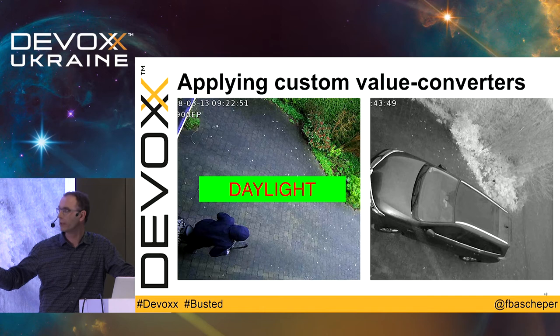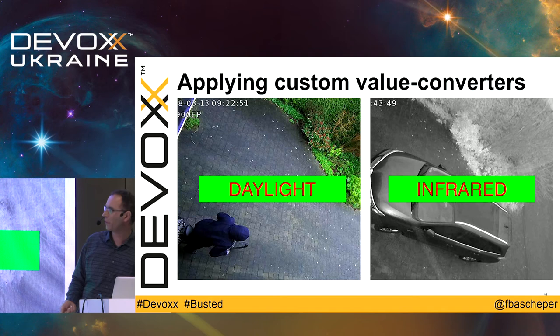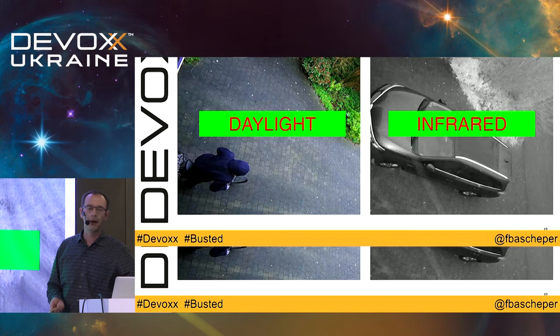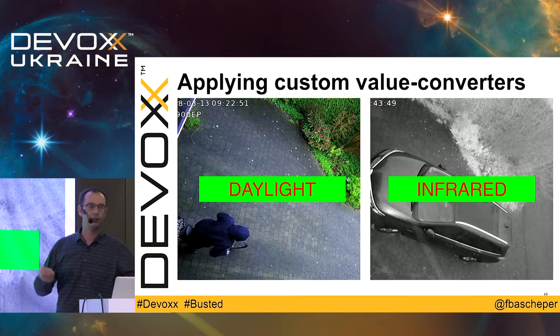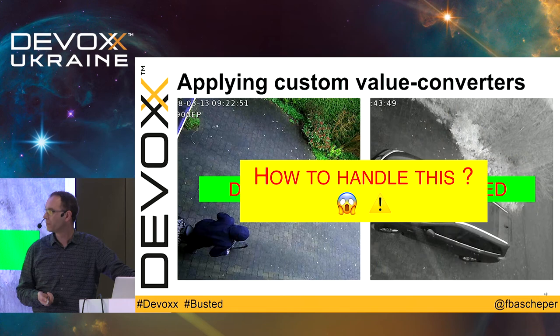Now there's a problem: during daylight I get colorful images, but at night the infrared sensors kick in and produce black-and-white images. Also, the images from the camera tend to be pretty large, and that makes it more difficult for TensorFlow to analyze them. So I've written a custom value converter that converts the image to grayscale and reduces the size, making everything a bit faster.